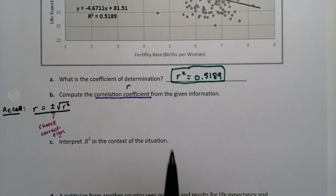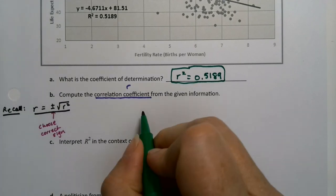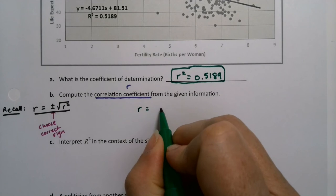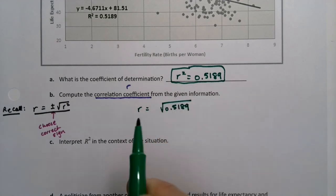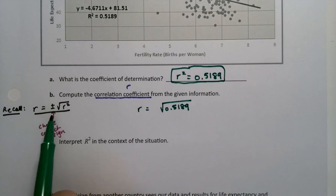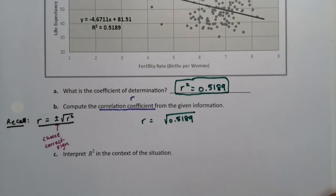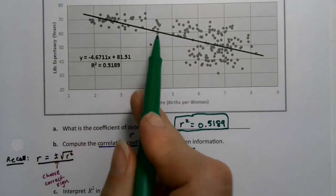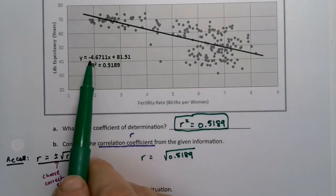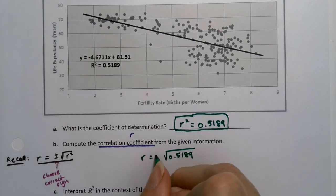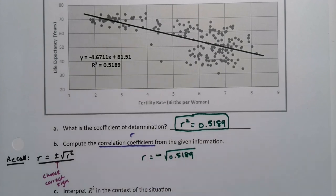So what's that mean for us? Well, I need to find r, so I need to take the square root of .5189. Now am I going to choose positive or am I going to choose negative? When I look at the graph, I can see that it has a negative slope. Also, when I look at the equation of the line, if they didn't give me the graph, I can see it has a negative slope. So that means I'm going to choose the negative one. And I'll make a little note.